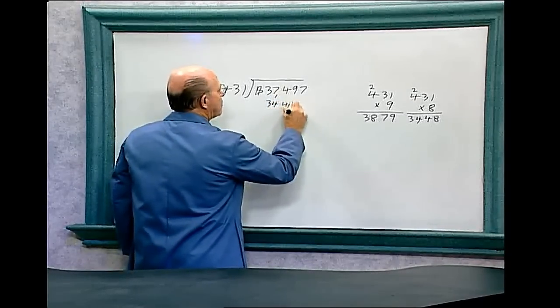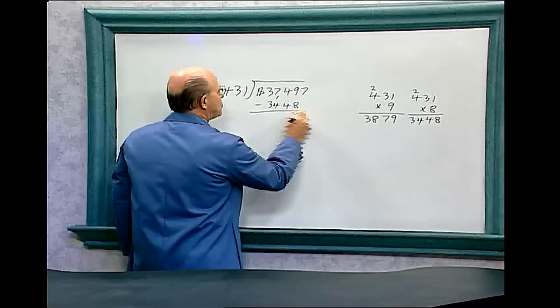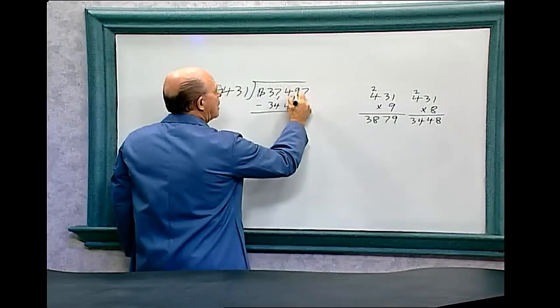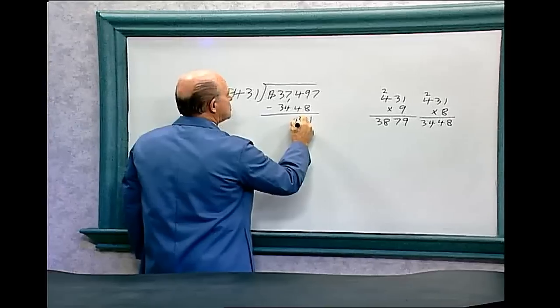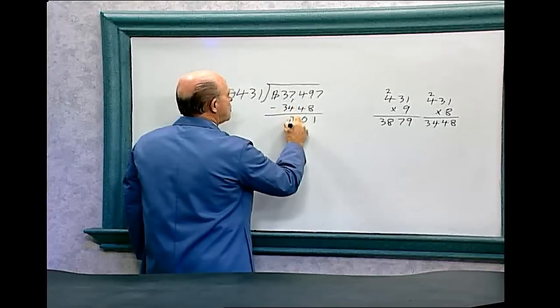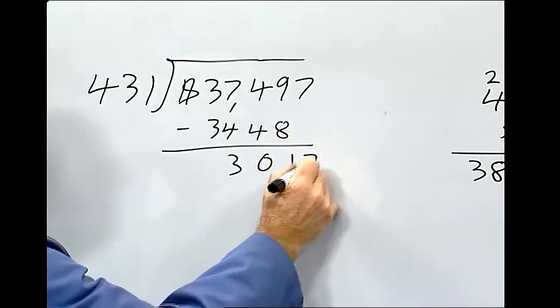3, 4, 4, 8, and subtract that. 9 minus 8 is 1, 4 minus 4 is 0, 7 minus 4 is 3. Bring down the 7.